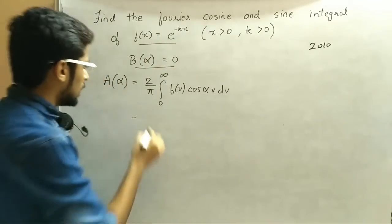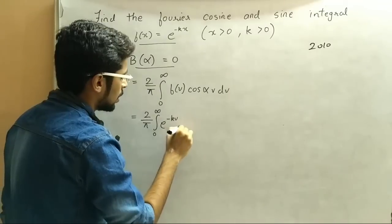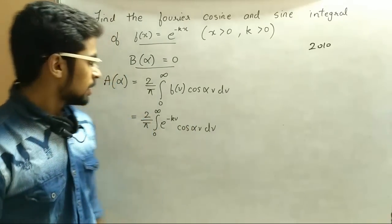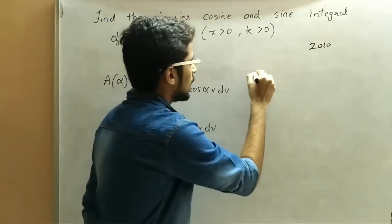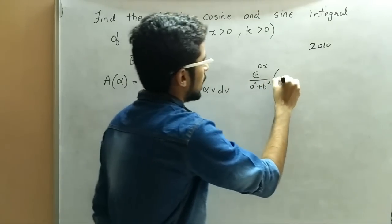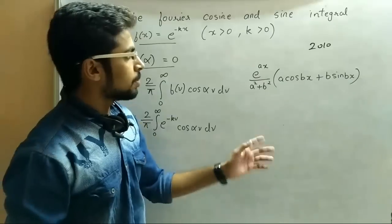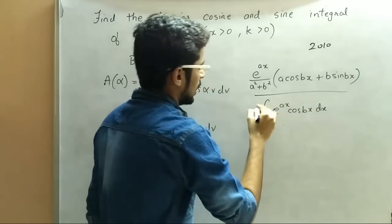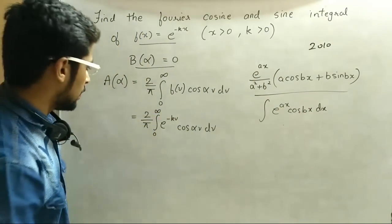So a(α) equals 2/π times the integral from zero to infinity of f(v) cos(αv) dv. Now we will put the value of f(v). So we will get 2/π times the integral from zero to infinity of e^(−kv) cos(αv) dv. Here we use the formula: the integral of e^(ax) cos(bx) dx equals e^(ax)/(a²+b²) times (a cos(bx) + b sin(bx)).